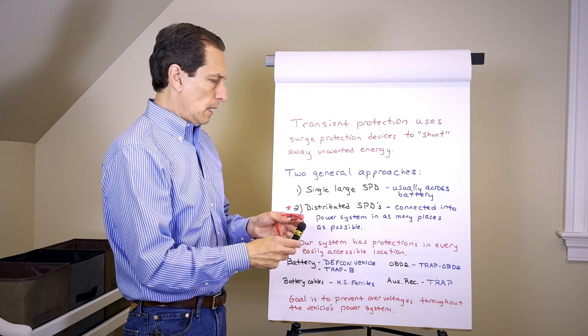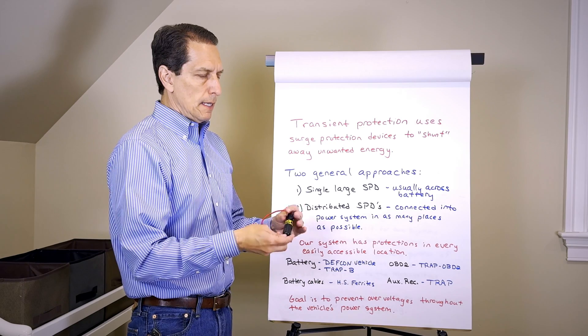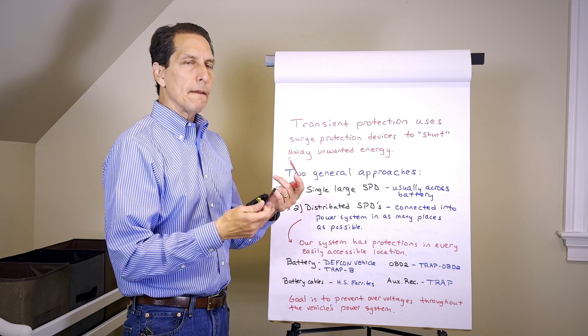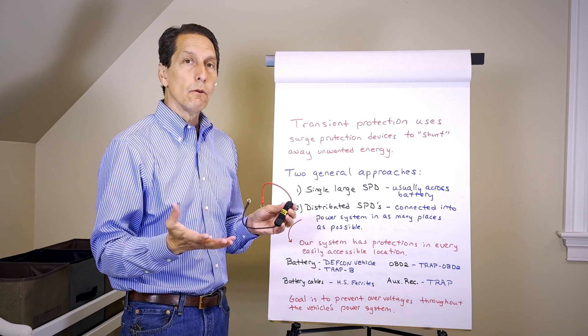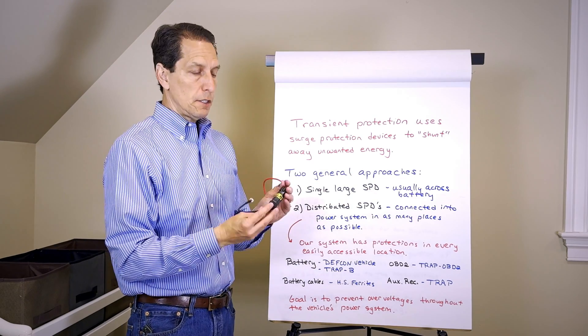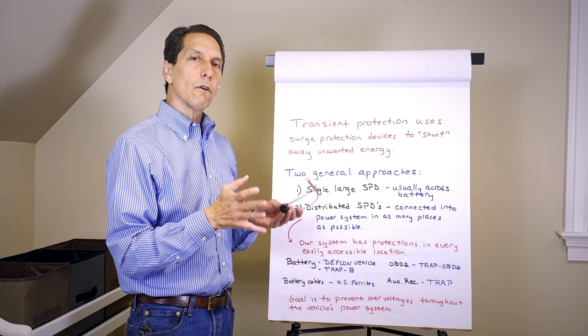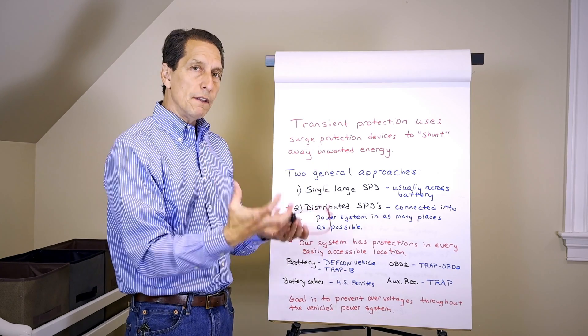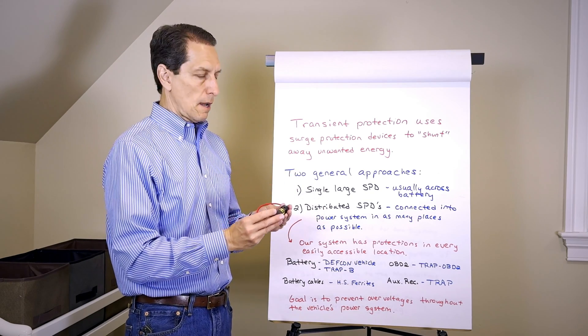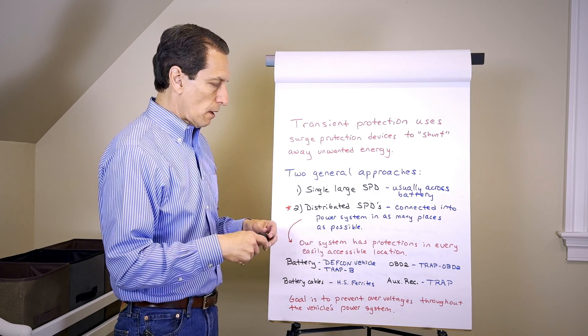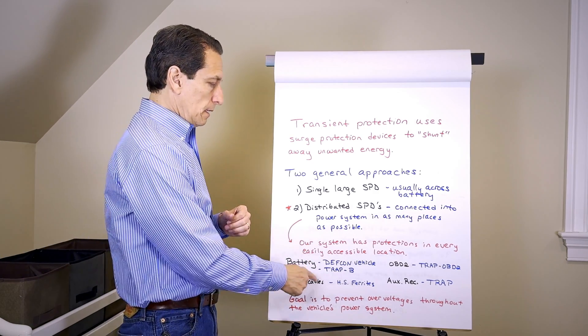The other thing that can attach across the battery is this much smaller one called a Trap B, Trap Battery version. It's a much smaller version but very high speed—faster than the Defcon Vehicle or any typical large surge protection device. It has a super fast component in it. By putting those in parallel across the battery, you get the benefits of the heavy drain as well as the super fast turn-on time of the Trap B.